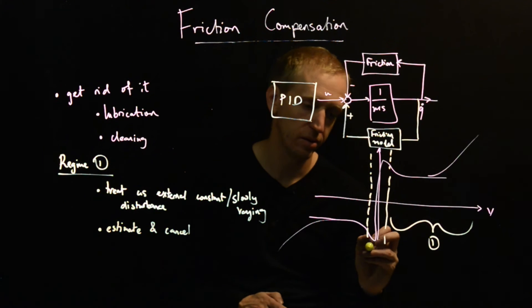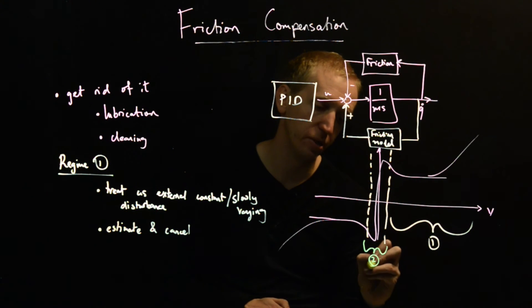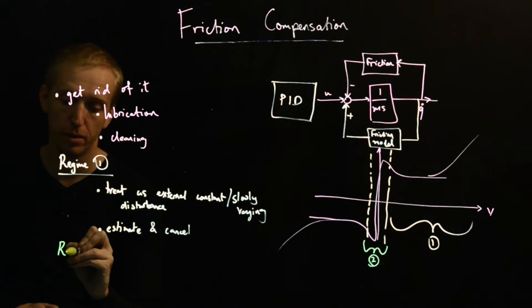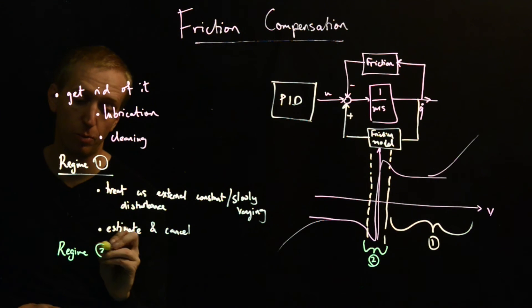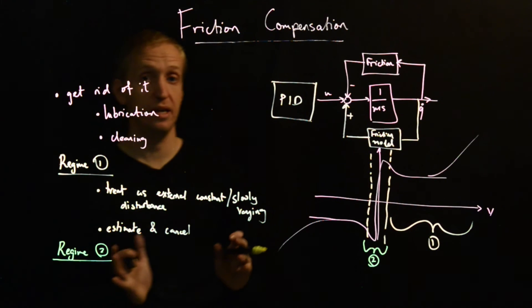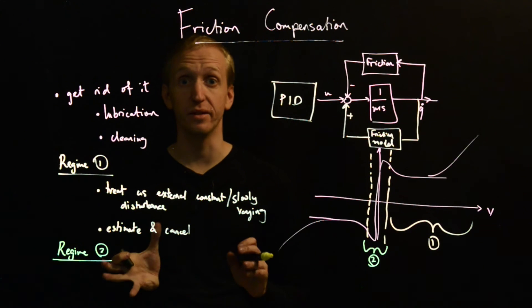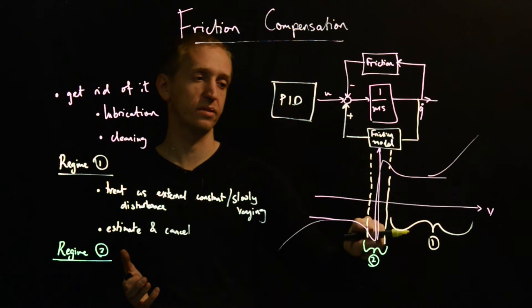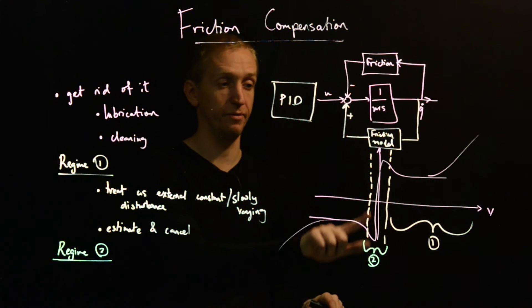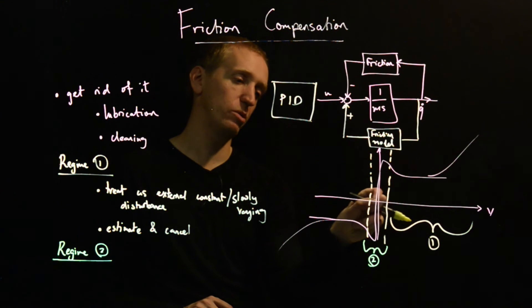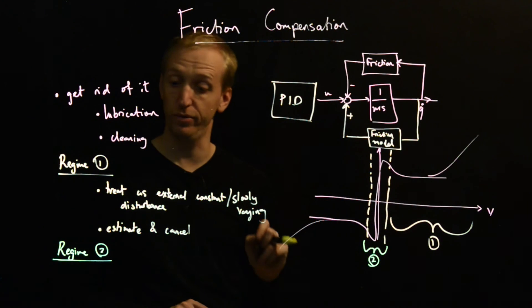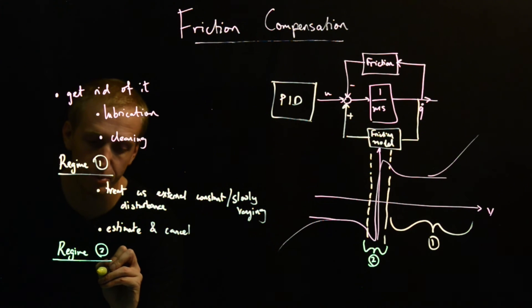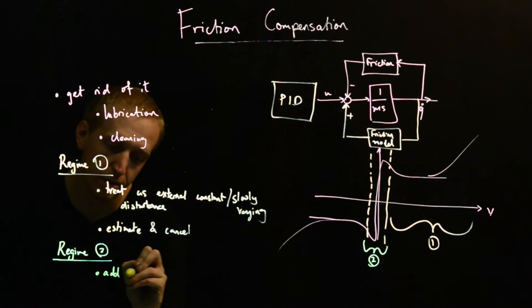That's operating regime one. How about this slightly annoying region where you have these high stiction forces? If we're in regime two, we need to operate in regime two. A common tactic here is to introduce what's called a dither signal. The purpose of this dither signal is to try and prevent us from ever operating on this part of the curve here. We might be operating in this region here, but we'll just try and prevent ourselves ever actually having zero velocity. Or if we do, we'll try and push ourselves away very quickly. And that's what the dither signal is supposed to do.